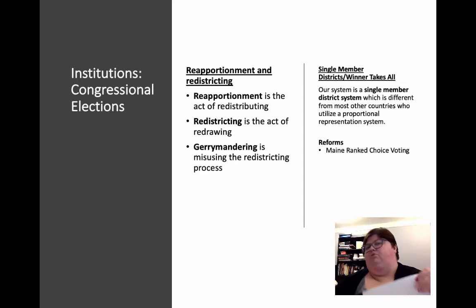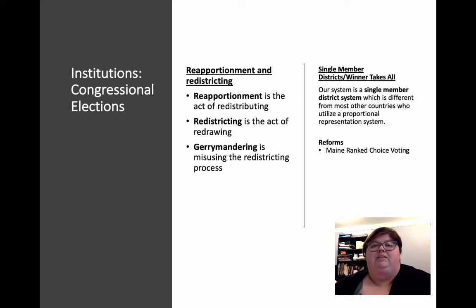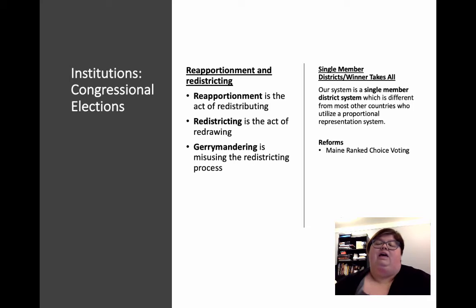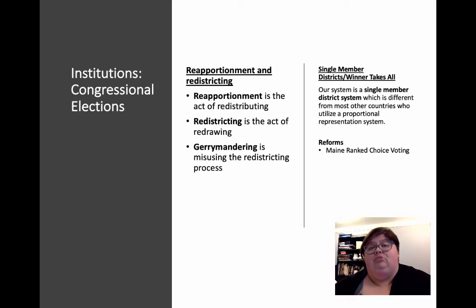There used to be longer paper forms you could fill out, but it's all online now. Reapportionment means if there are more people in Michigan than there were last time, based on population across the nation, we might get more representatives; if there are fewer, we may get fewer. Redistricting is the act of redrawing those district lines based on the number of representatives we have — you may remember us doing the redistricting game in class. And gerrymandering is the misuse of that redistricting process for partisan or other types of gain.